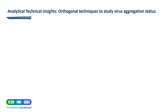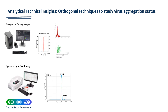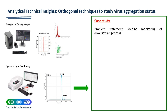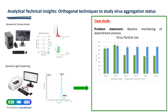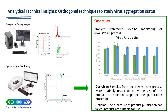Here I would like to demonstrate an orthogonal technique we use at APC for monitoring virus aggregation. We have developed NTA and DLS methods to monitor the level of aggregation in the process. In a case study, samples taken routinely during the process and analyzed using DLS showed an increase in viral particle size, suggesting that the purification technique at a particular time point may not be suitable or may be causing aggregation in the sample. This has helped us tremendously to speed up decision making during process development.